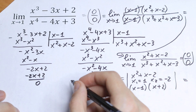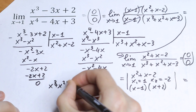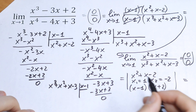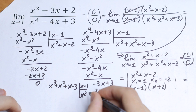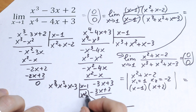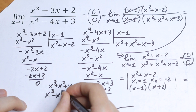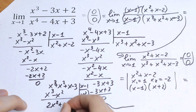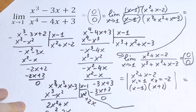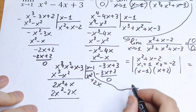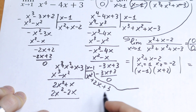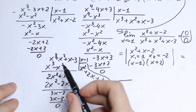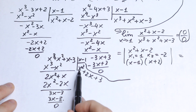We divide x-cubed plus x-squared plus x minus 3 by (x minus 1). Multiplying by x-squared gives x-cubed minus x-squared. Then multiplying by 2x gives 2x-squared minus 2x. Finally, multiplying by 3 gives 3x minus 3, which is 0. So the denominator can be written as (x minus 1) times (x-squared plus 2x plus 3).